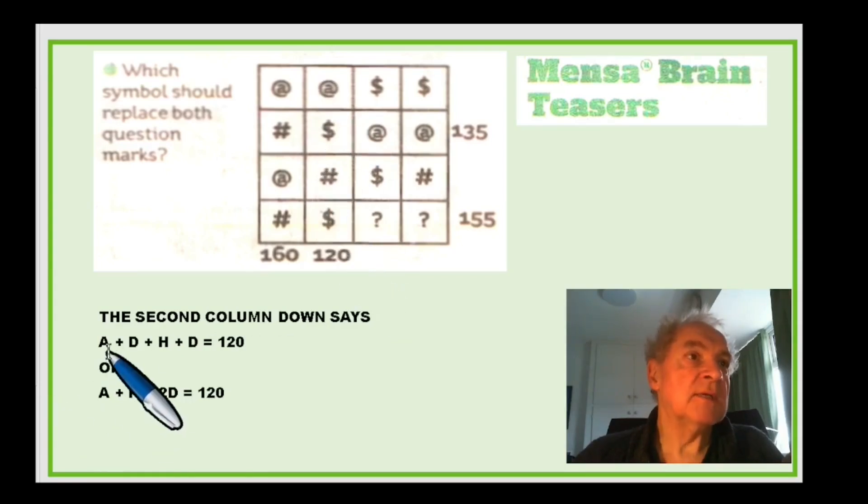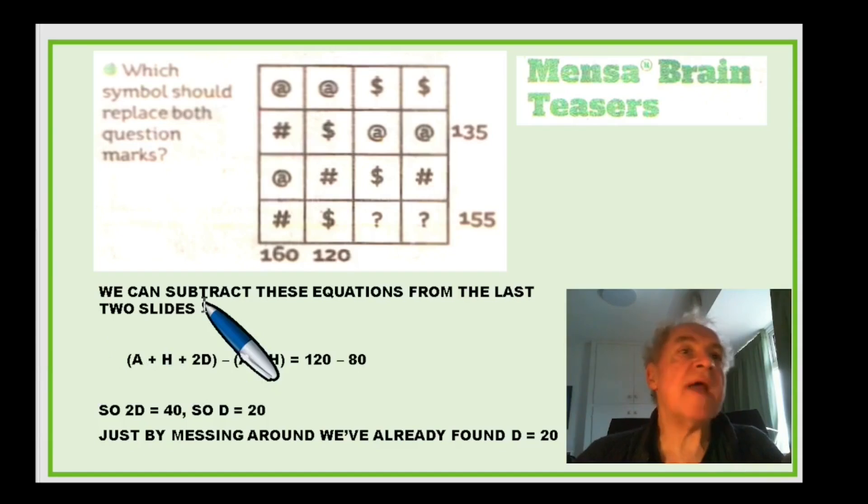Now the second column down says that A plus D plus H plus D equals 120, or more compactly so an A plus an H plus 2D equals 120. We can subtract these equations. So if you've got this second equation down A plus H plus 2D and then the one that we worked out which was half of this one which is A plus H equals 80, you subtract them. If you actually work them out you've got an A minus an A and you've got an H minus an H and then you're just left with the 2D on the left hand side and on the right hand side you've got 120 minus 80 which is 40. So you're just left with 2D equals 40. So D equals 20, so the dollar equals 20.